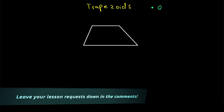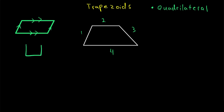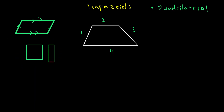A trapezoid is a special type of quadrilateral. Remember that a quadrilateral is a polygon with four sides. You're probably already familiar with some types of quadrilaterals, like parallelograms, that have two pairs of parallel sides, or some of the special types of parallelograms, like squares and rectangles, which also have two pairs of parallel sides.